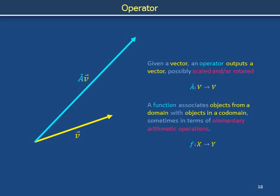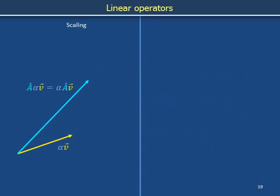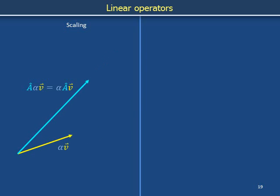Consider operators with two special properties. First, a-hat has a scaling property: pre-stretching vector v by a scale factor alpha before applying operator a-hat has the same effect as stretching a-hat v afterward by the same factor. The scale factor can be applied either before or after operator a with identical results in both cases.